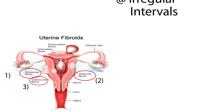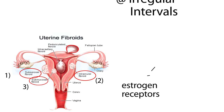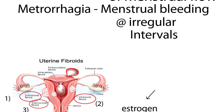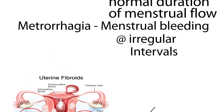Important to remember that these fibroids have estrogen receptors on them. Because they have estrogen receptors, they can grow when those receptors are stimulated. We'll touch back on this diagram a little bit later.